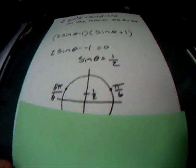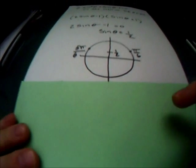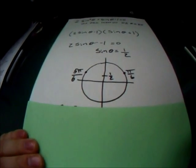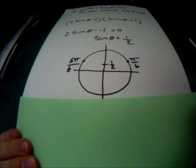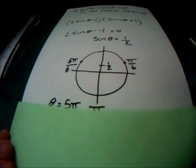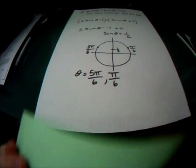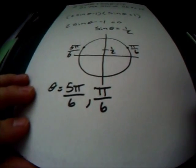So if we do this unit circle, we can find that y is positive 1 half at pi over 6 and 5 pi over 6. So for this part of the equation, theta is equal to 5 pi over 6 and pi over 6.